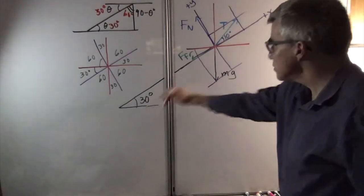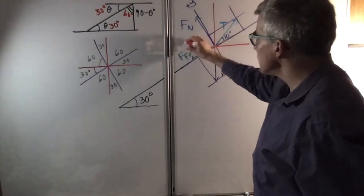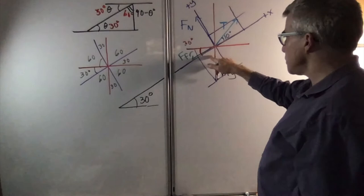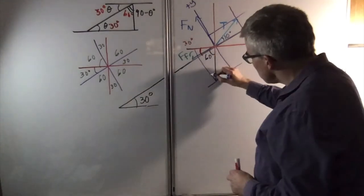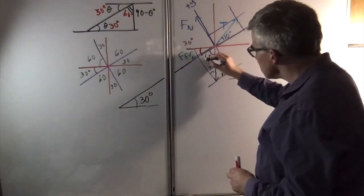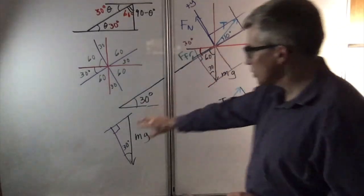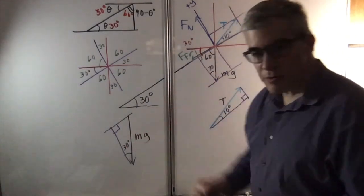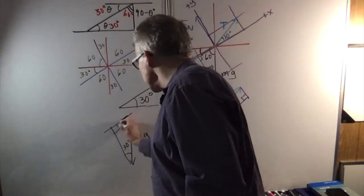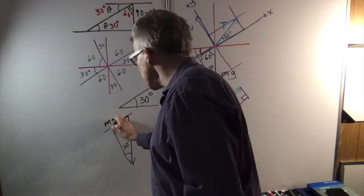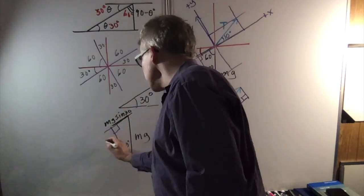Which means if that's 30, this is 30 degrees, this is 60 degrees, and this is 30 degrees. So I've drawn that triangle here. We've got mg, we've got 30, and the opposite of the 30 here is mg sine 30, and the other side.